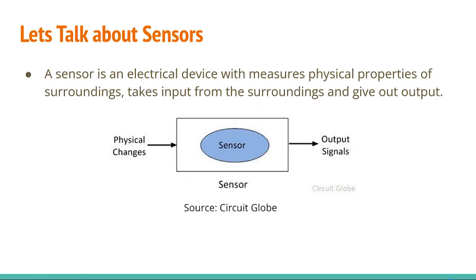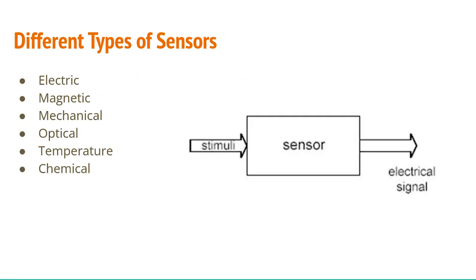Let's talk about sensors first and get our basics clear. A sensor is an electrical device which measures the physical properties of the surrounding - it takes input from the surrounding and gives out the output. There are different types: electric sensors, mechanical sensors, optical sensors, temperature sensors, chemical sensors, and so on. The electric sensor takes electrical stimuli as input and gives out an electrical signal.